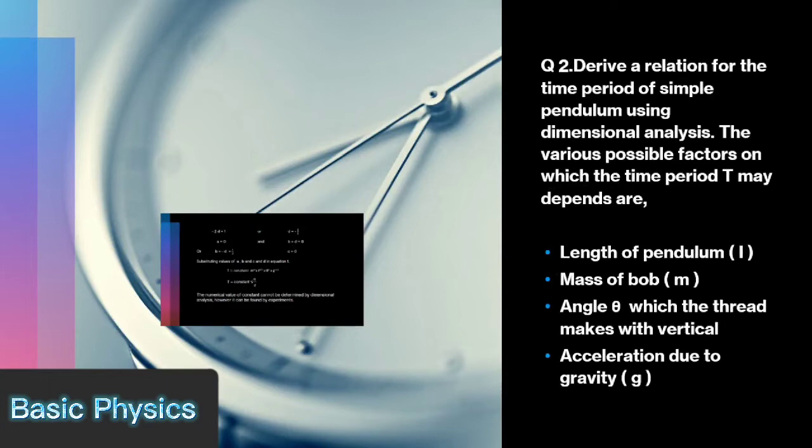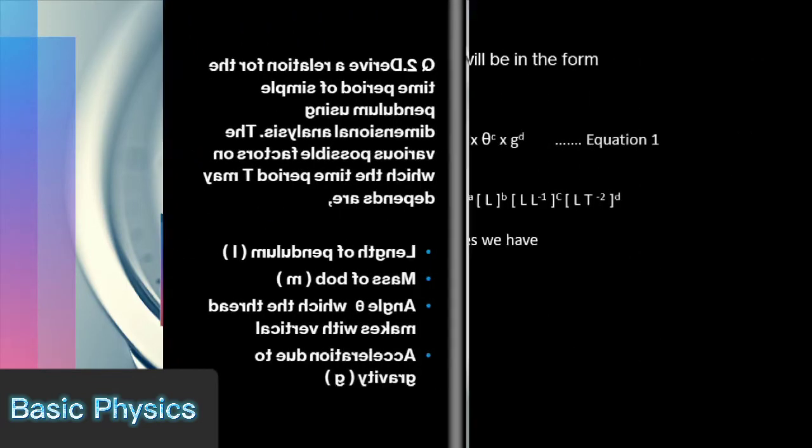The various possible factors on which the time period may depend are: length of pendulum l, mass of bob m, angle theta which the thread makes with vertical, and acceleration due to gravity g.